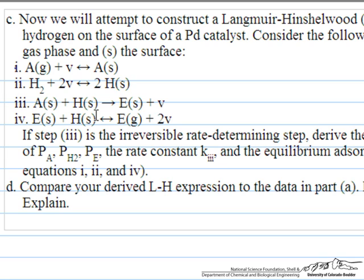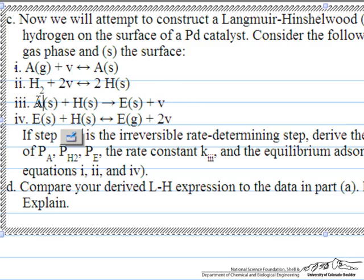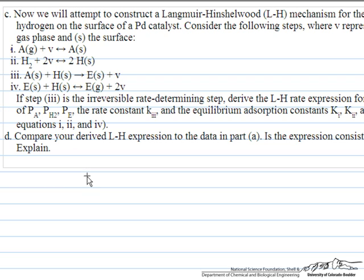We're going to test this out. To do Langmuir-Hinshelwood, we take each of the steps in sequence and write a relationship that helps us describe that step. Since step 3 is rate-determining and all the other steps are reversible, we assume those other steps are at equilibrium. So we start with step one and write an equilibrium expression for it.